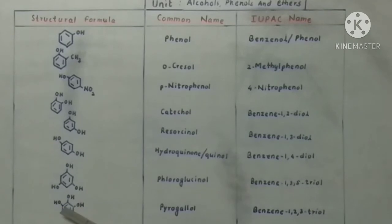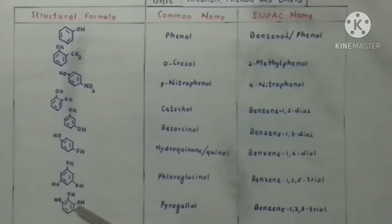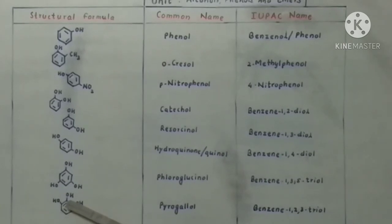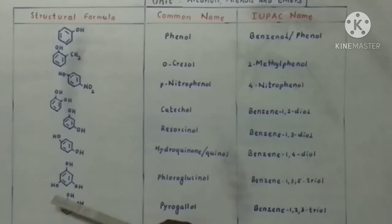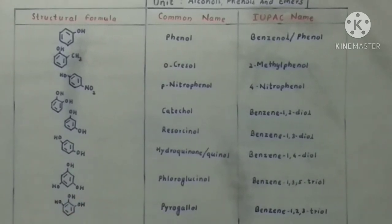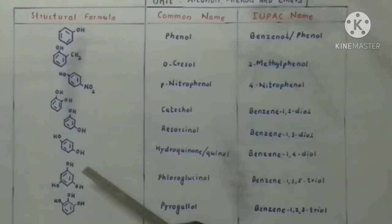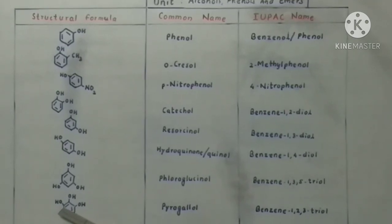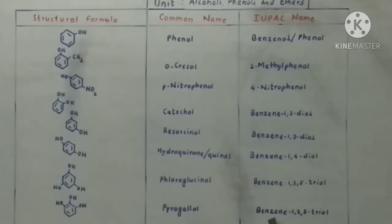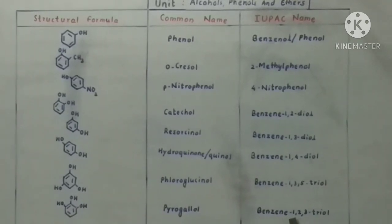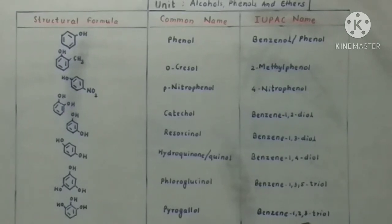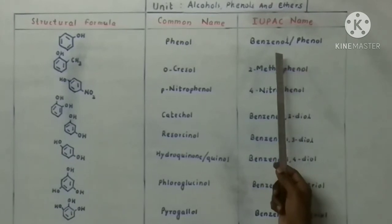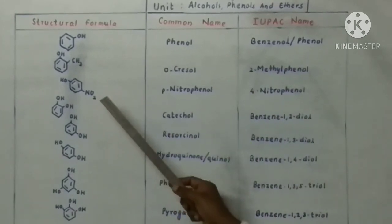For the structure where three hydroxyl groups are attached to the benzene ring at the first, second, and third carbon atoms — taking the clockwise direction as 1, 2, 3 — the IUPAC name is benzene-1,2,3-triol. In this way, we can write IUPAC names of phenols in a simple way.